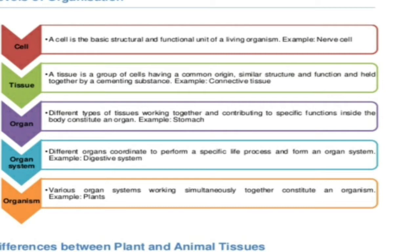Cells combine to form tissues. So what are tissues? Tissue is a group of cells having a common origin, similar structure and function, which are held together by a cementing substance. Cementing means a joining substance. For example, connective tissues like blood, lymph, etc.